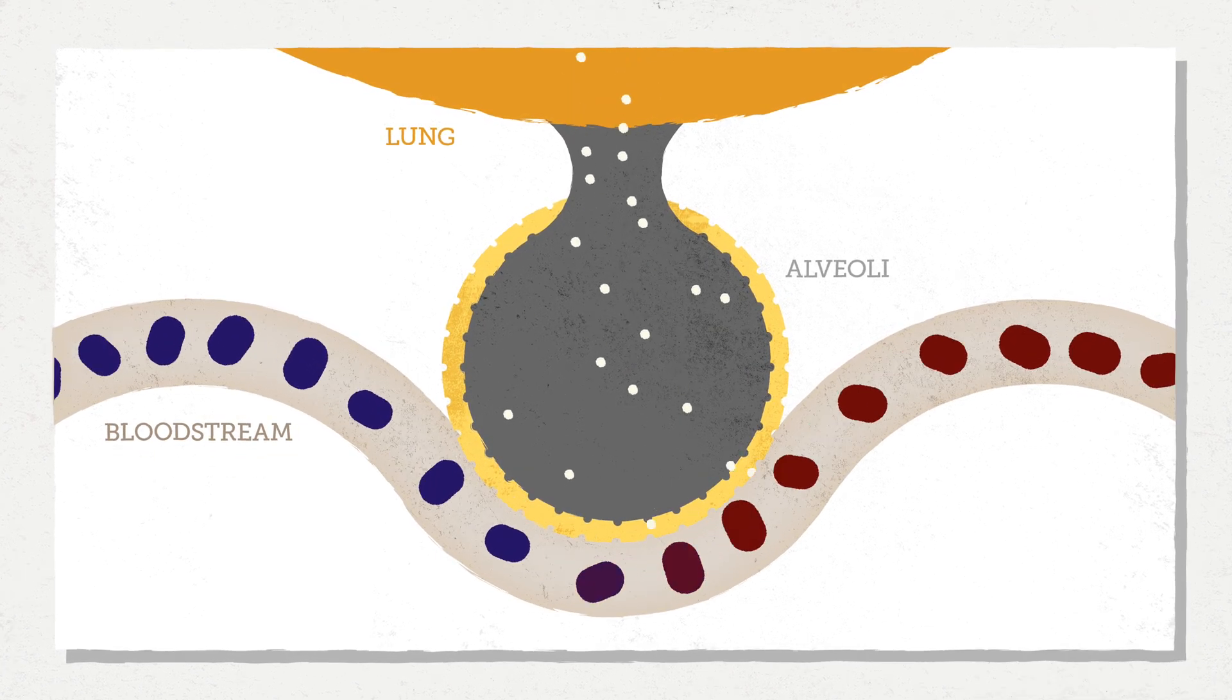That oxygen diffuses across the membrane of our lungs into our bloodstream. And then that blood is pumped to the various parts of our body. The cellular membranes respire carbon dioxide that comes back to our lungs. Carbon dioxide goes into our lungs, and then we exhale carbon dioxide.